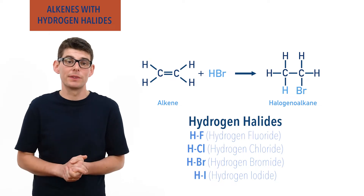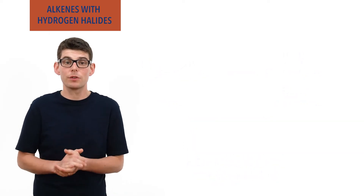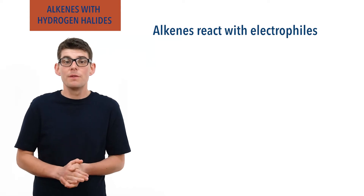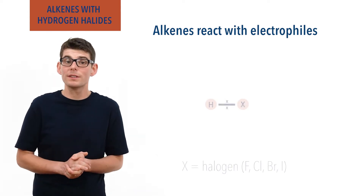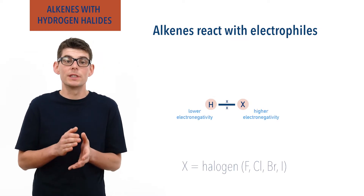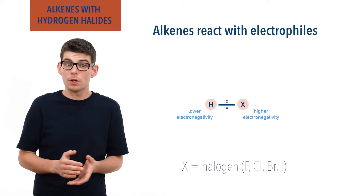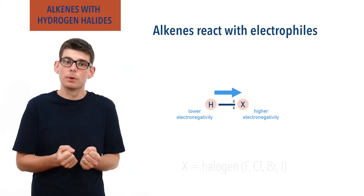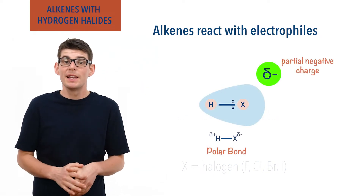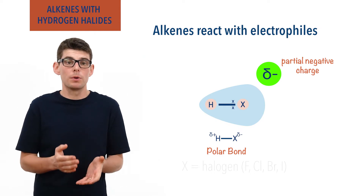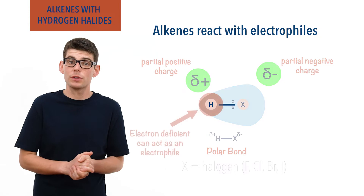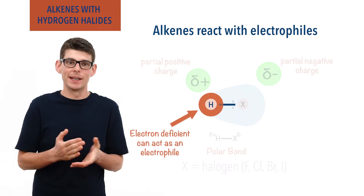To get any reactions started with an alkene, we need to have an electrophile. A hydrogen halide molecule is polar. This is because the halogen will always have a higher electronegativity than the hydrogen it is bonded to, and as a result will attract the electrons in the bond towards itself and end up with a partial negative charge, leaving the hydrogen with a partial positive charge. This means the hydrogen becomes electron deficient and is able to act as an electrophile.